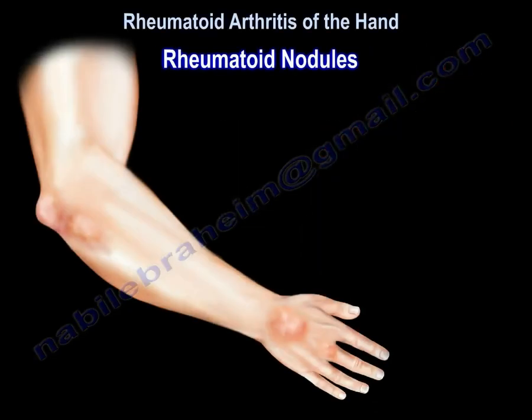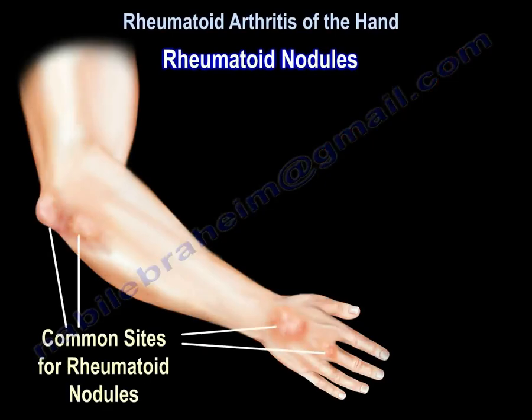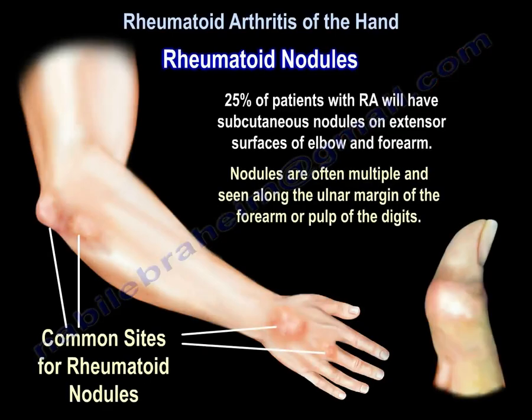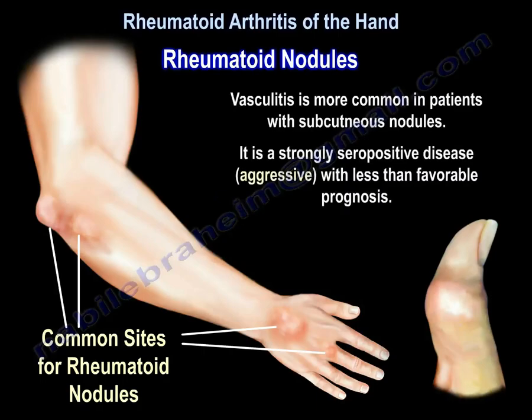Regarding rheumatoid nodules, 25% of patients with rheumatoid arthritis will have subcutaneous nodules on the extensor surface of the elbow and forearm. Nodules are often multiple and seen along the ulnar margin of the forearm or the pulp of the digit.